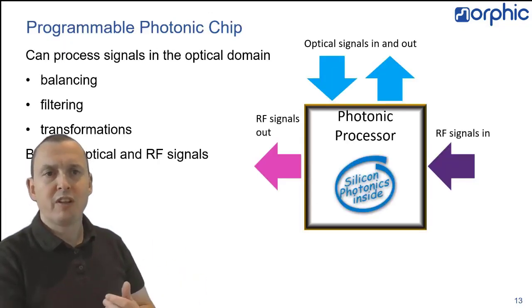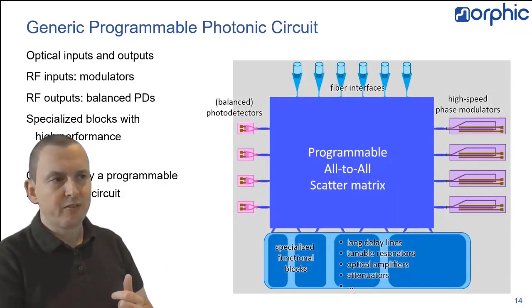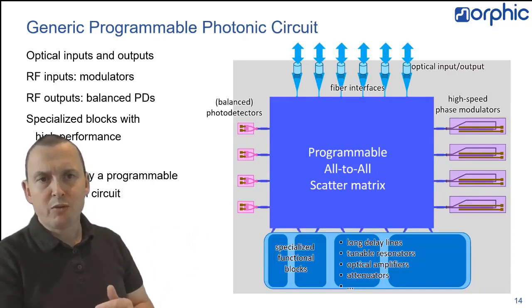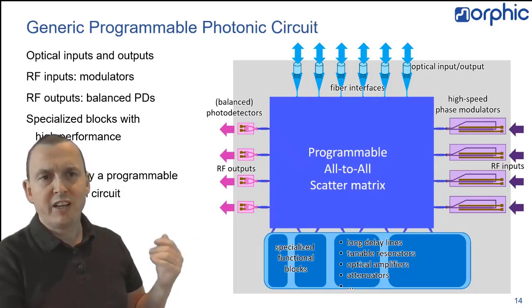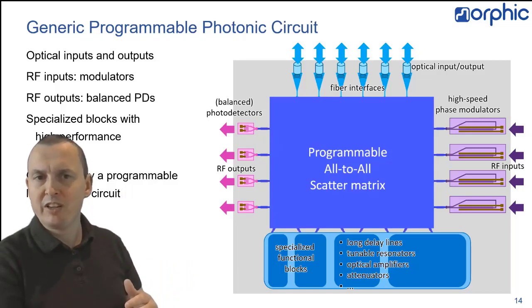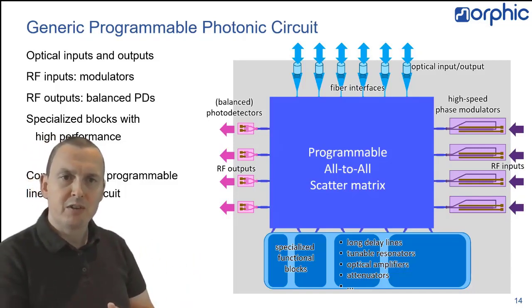Now, such a circuit would look a bit like this if you just start from a black box. It can take optical signals in and out, but it can also process high-speed electrical signals, radiofrequency signals. We look in a bit more detail. The optical inputs would essentially be fiber ports, but then the electrical inputs are essentially high-speed electro-optic modulators that immediately convert a high-speed electrical signal into an optical signal by modulating it into a laser carrier. And at the outputs, RF outputs, you find the opposite operation, where a modulated optical signal is converted back into an electrical signal. And in between all these ports is a programmable, all-to-all photonic circuit.